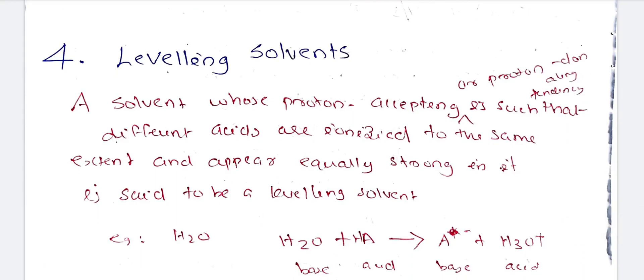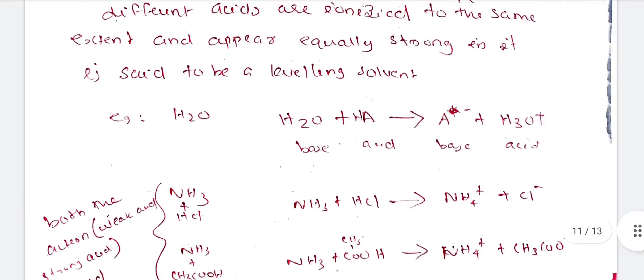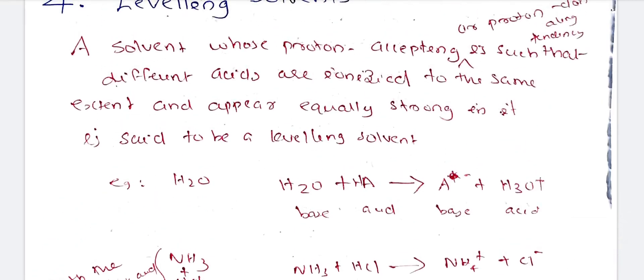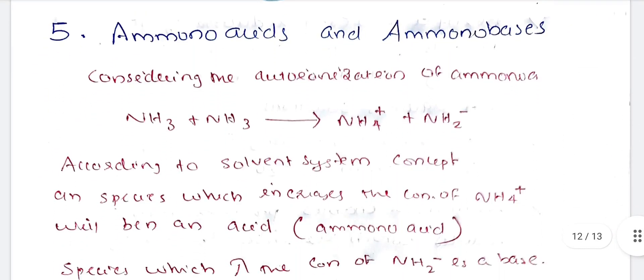A leveling solvent is a solvent whose proton-accepting or proton-donating tendency is such that different acids are ionized to the same extent and appear equally strong in it — it is said to be a leveling solvent.